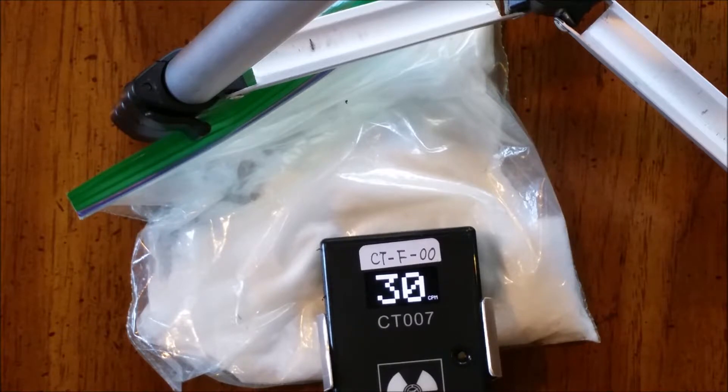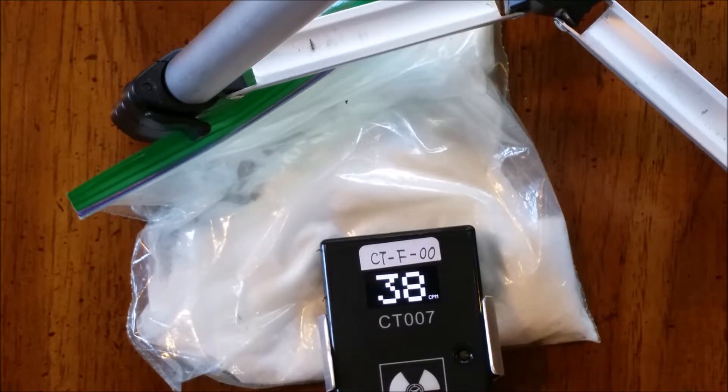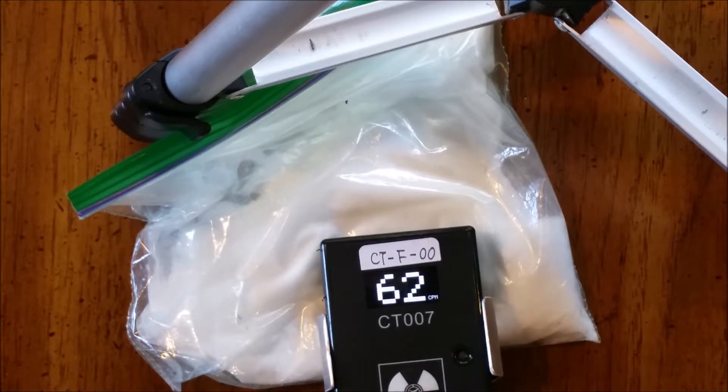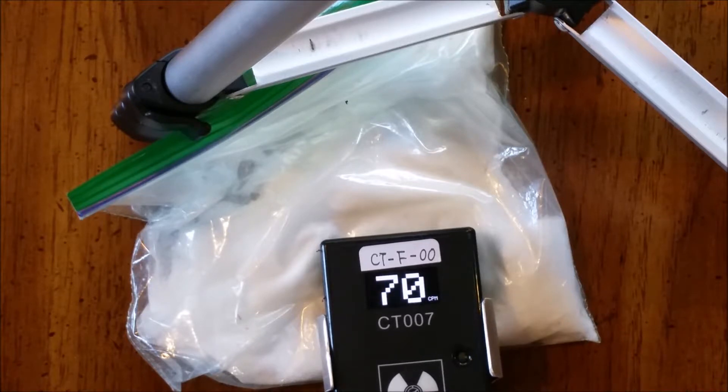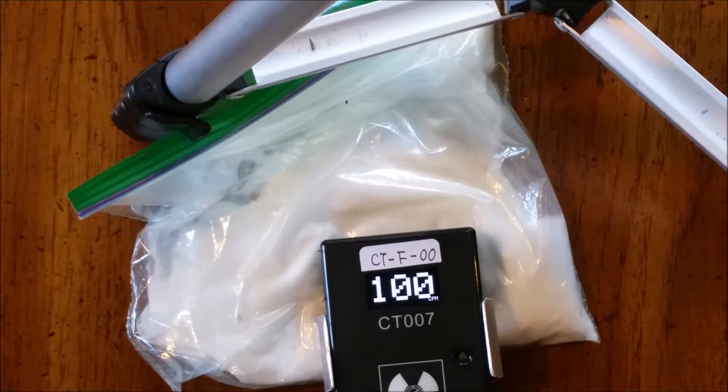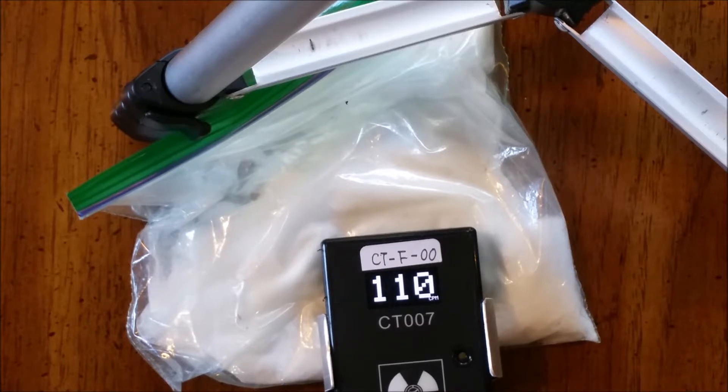This is on a thirty second averaging. The display is averaging the count rates for every thirty seconds. So we'll wait a few seconds for this to reach its maximum. So yeah, the no salt gives us about 100 CPM or about ten times background with the beta window open.